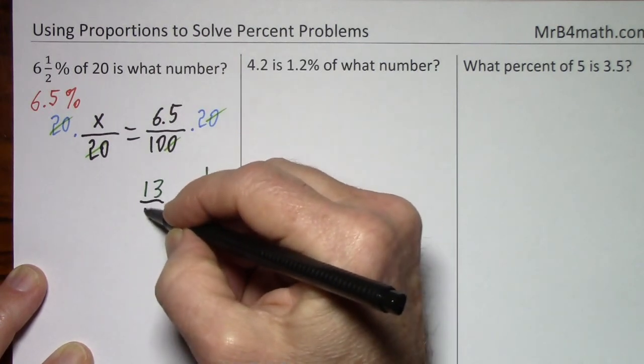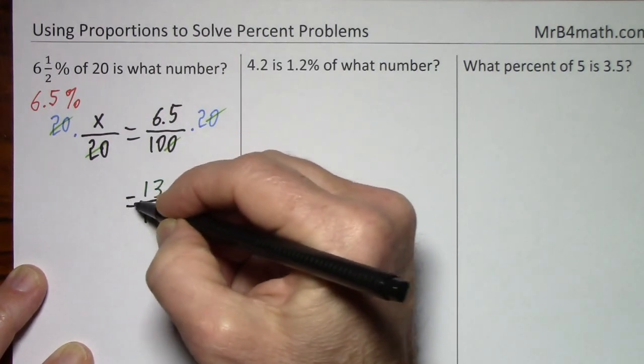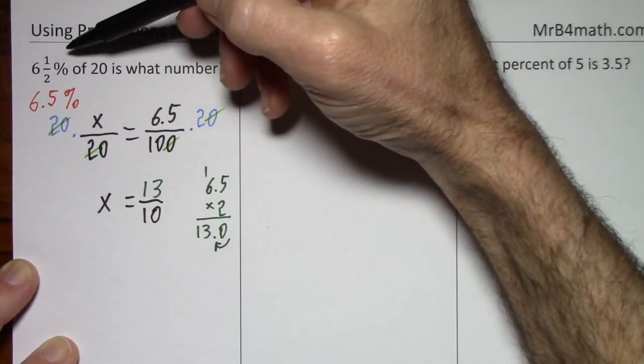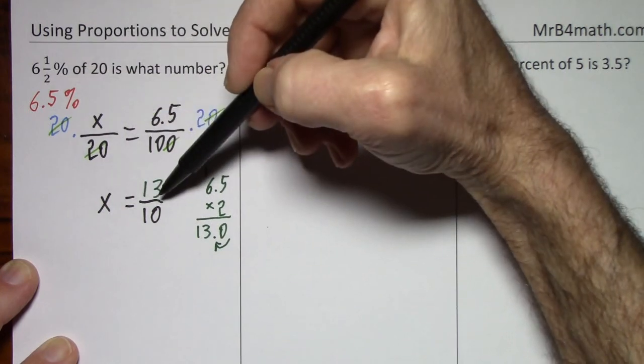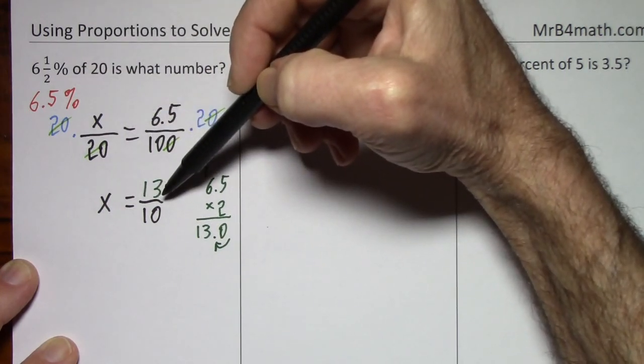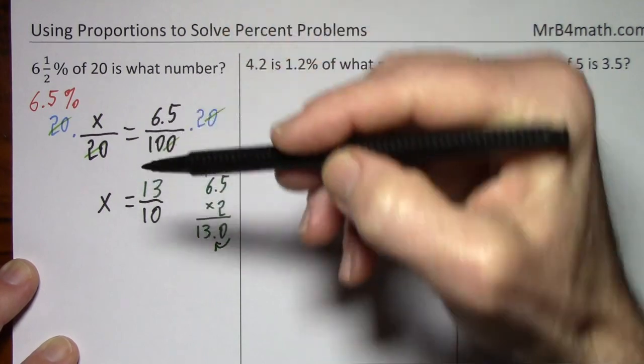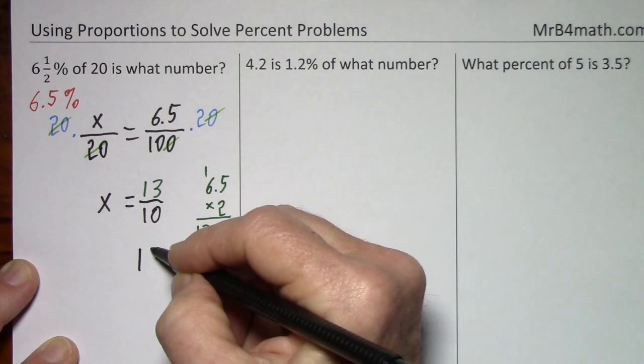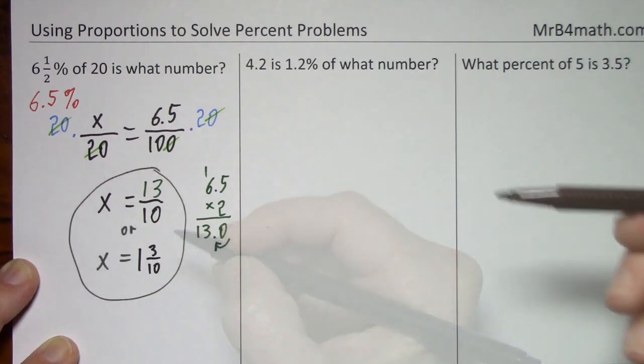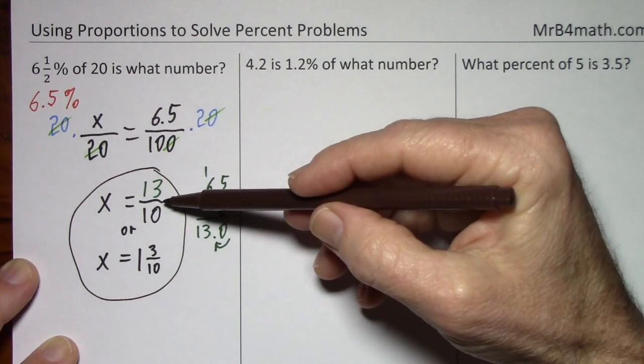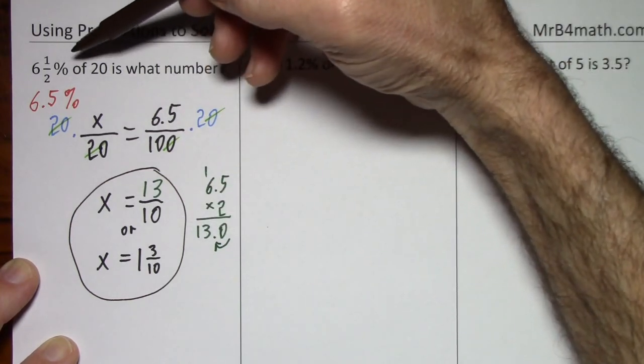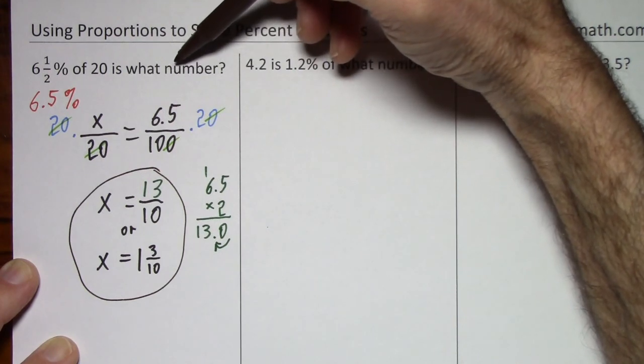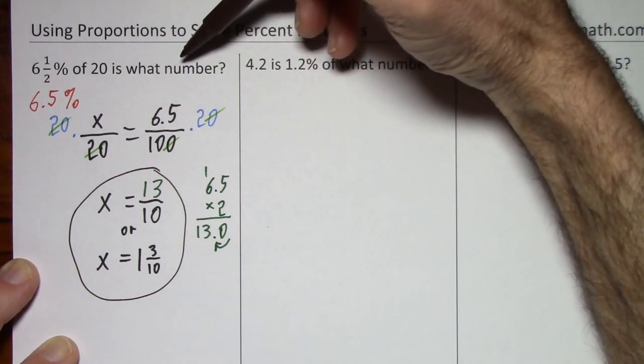10 is still in the denominator. And bring down the x. Usually if you start with a mixed number or a fraction, you end with a mixed number or a fraction rather than a decimal. So I could leave it as 13 tenths or I could write this as 1 and 3 tenths. So what this says is 6.5% of 20 is 13 tenths. Might seem like a strange answer, but it's the correct answer.